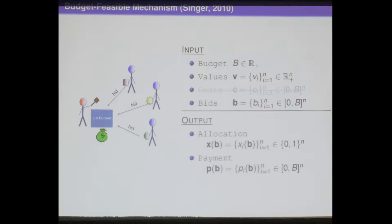Actually, this is exactly the budget feasible mechanism model considered by Singer in his 2010 paper.